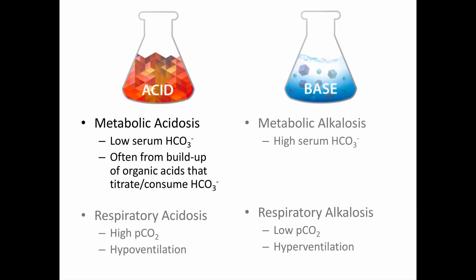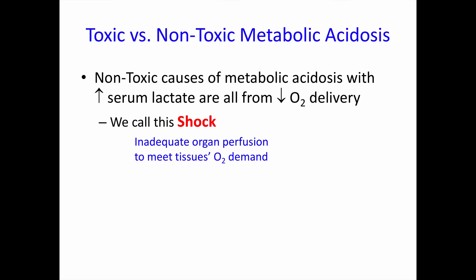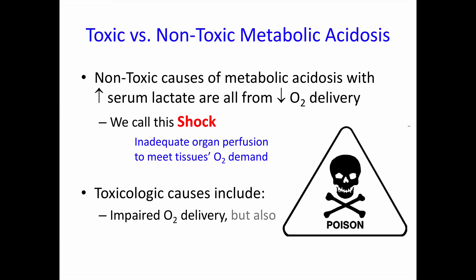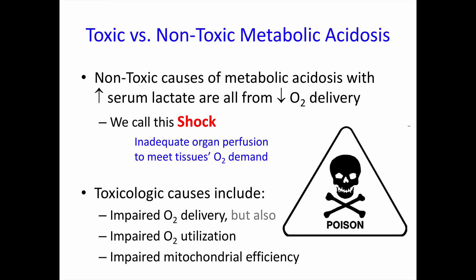Here's a quick review of acid-base physiology. A metabolic acid-base disorder is characterized by changes in the serum bicarbonate level, and in a metabolic acidosis the bicarbonate level is low — this typically occurs because there is accumulation of other organic acids that titrate or consume the bicarbonate. Virtually all non-toxicologic causes of metabolic acidosis with an elevated serum lactate occur from decreased oxygen delivery to the tissues, and we call this condition shock — defined as inadequate organ perfusion to meet the tissue's oxygen demand. Toxicologic causes can be from impaired oxygen delivery, but also from impaired oxygen utilization despite adequate delivery, or impaired mitochondrial efficiency despite adequate oxygen delivery and utilization.